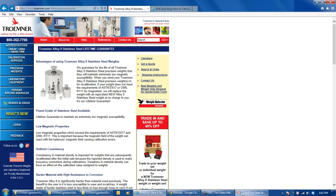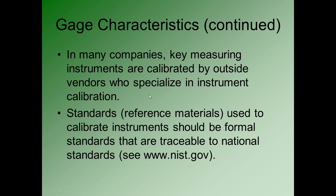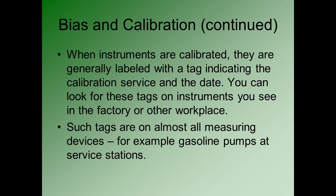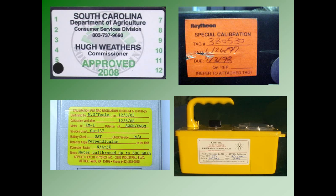When instruments are calibrated against these standard weights, they typically are labeled with a tag that indicates when they were calibrated, when the service was done. You can look for these tags in a variety of places in manufacturing environments, but also in many other environments. For example, tags indicating calibration are oftentimes on gasoline pumps at service stations.